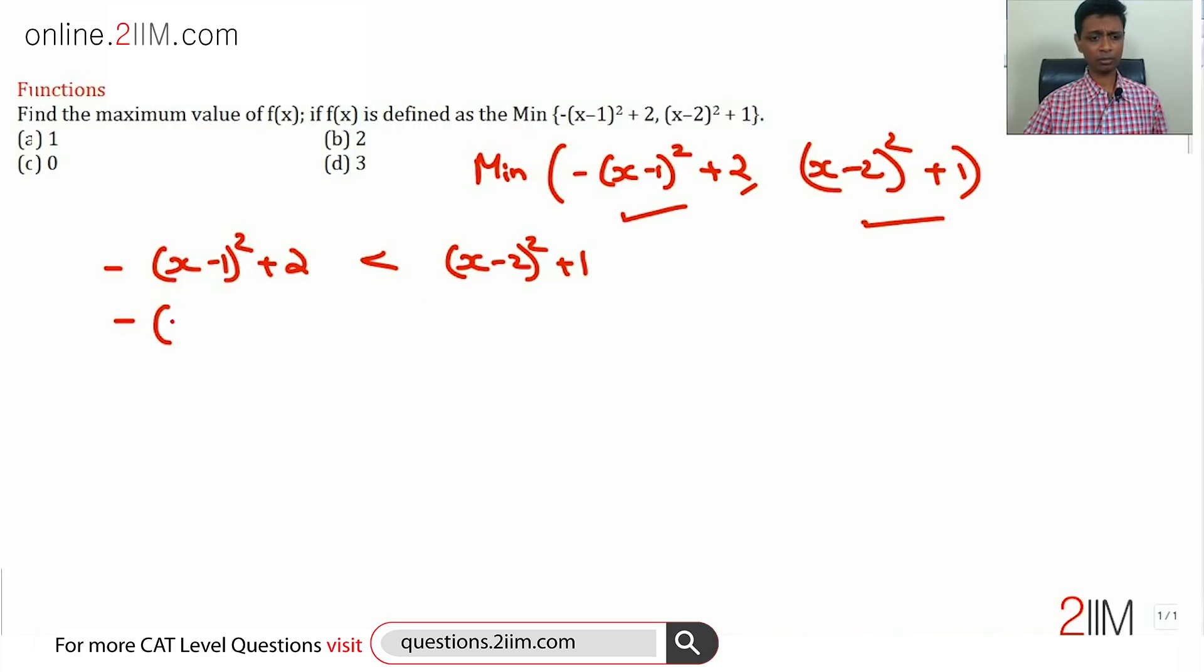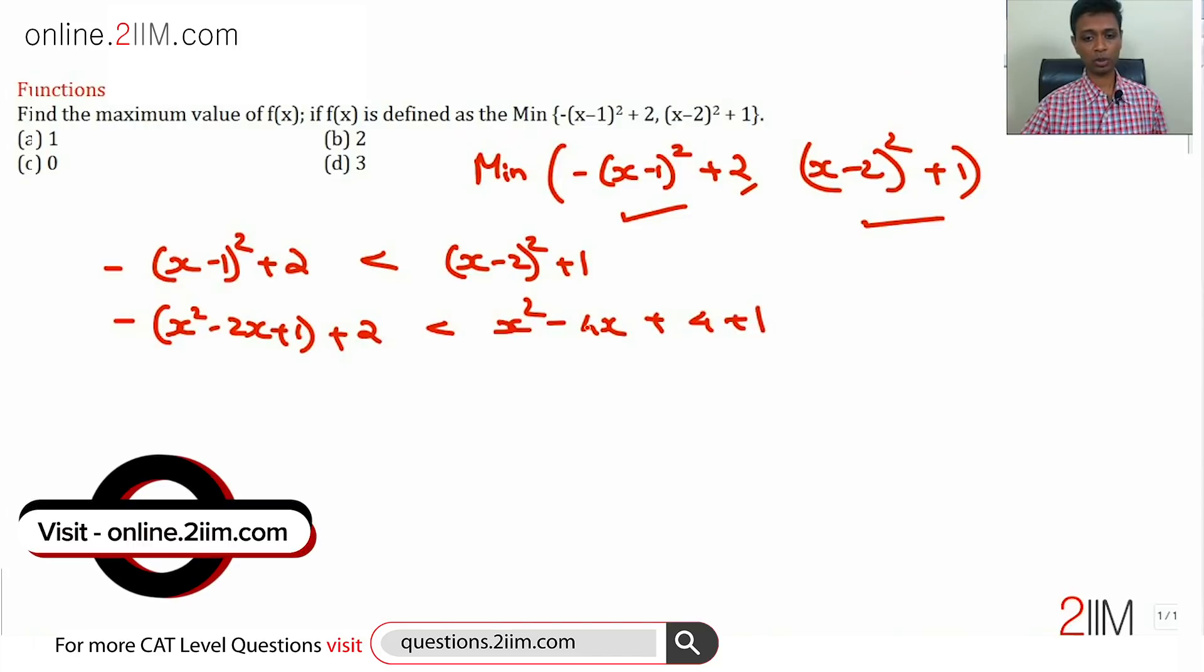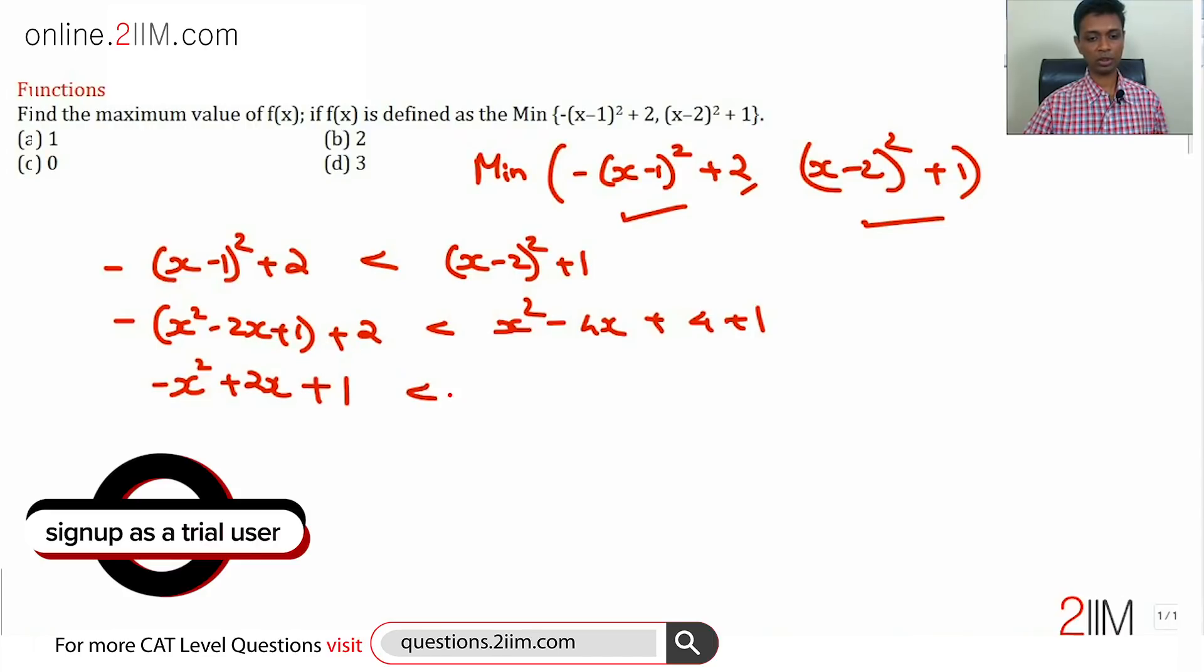Let us expand this: -(x² - 2x + 1) + 2 less than x² - 4x + 4 + 1. This is -x² + 2x - 1 + 2 less than x² - 4x + 5.